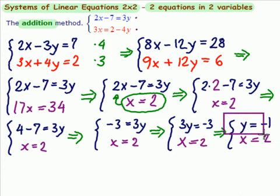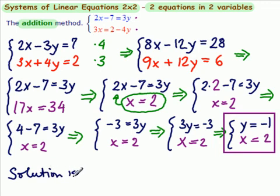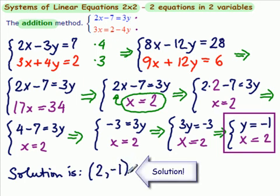So this is our solution right here. If we write it as an ordered pair, we have solution is x is equal to 2 and minus 1. Remember to order them x, y.